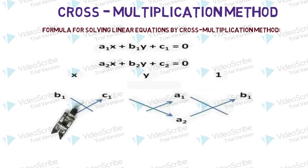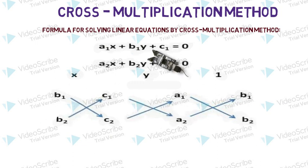The first equation is a1x + b1y + c1 = 0. This is equation number one. The second equation is a2x + b2y + c2 = 0. In the first equation, the coefficient of x is a1, coefficient of y is b1, and c1 is the constant.